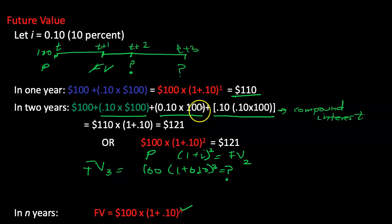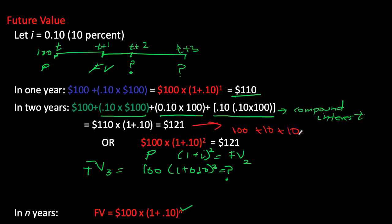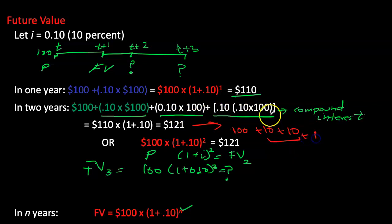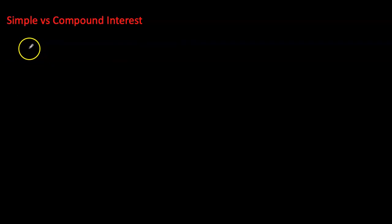For example, in year two I earned just $1 in compound interest on top of the $10 simple interest each year. Over two years, simple interest earned is $20, while compound interest earned an extra $1. That one dollar seems very small, but over 30 or 40 years that compound interest grows into a significantly larger amount.